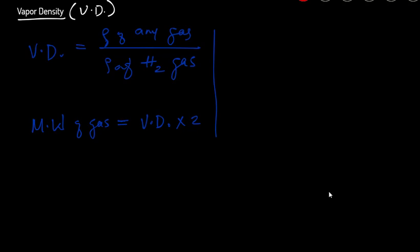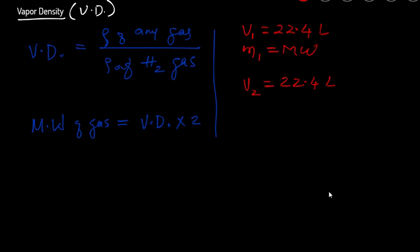The mass of that gas, m₁, is its molecular weight. For hydrogen, V₂ = 22.4 liters and m₂ = molecular weight of hydrogen = 2. We then plug all these values into the vapor density formula — these values go into the numerator and these go into the denominator.